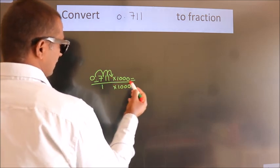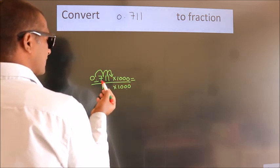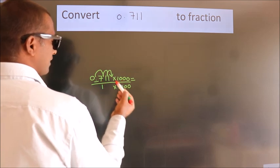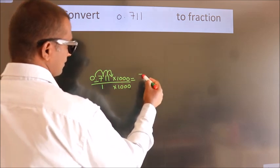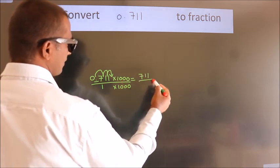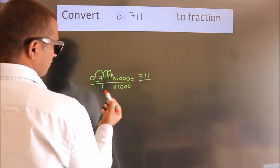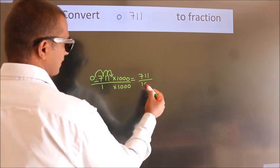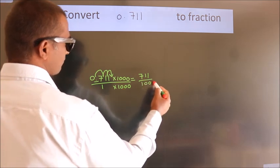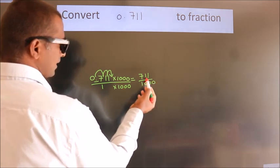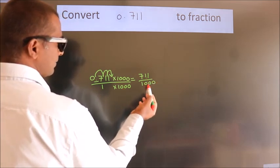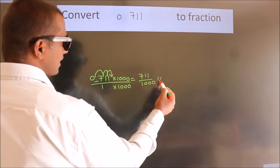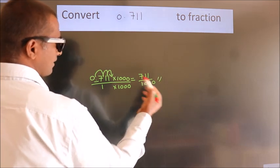0.711 multiplied by 1000 equals 711. 1 multiplied by 1000 equals 1000. This cannot be simplified any further. So, 711/1000 is our fraction.